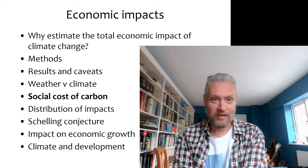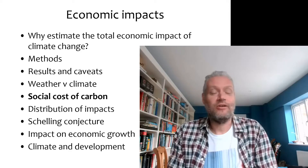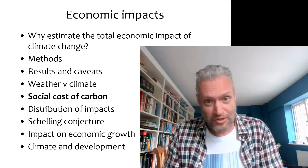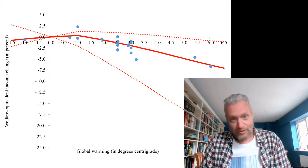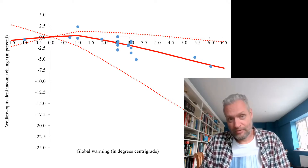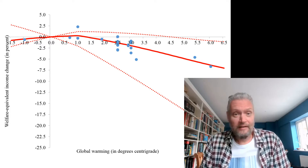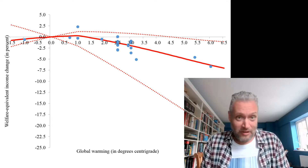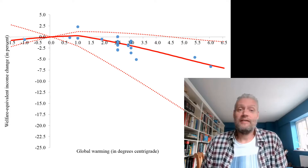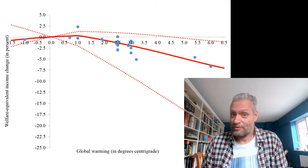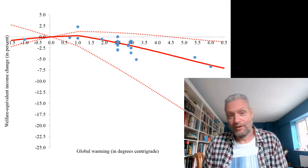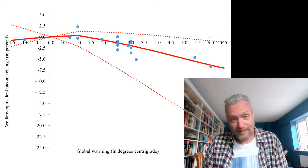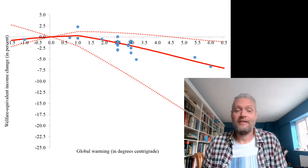I talked quite a bit about the total economic impact of climate change. Now let's have a look at the margin, at the so-called social cost of carbon. Here are 27 estimates of the total economic impact again. These estimates are irrelevant for policy. If you want to calculate optimal climate policy, if you want to maximize welfare, then what you do is write down the first order condition of optimality, and they contain a first partial derivative — not the total, but the marginal.